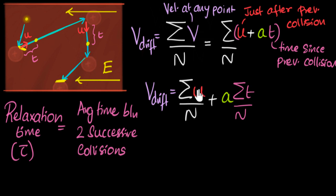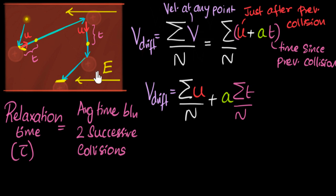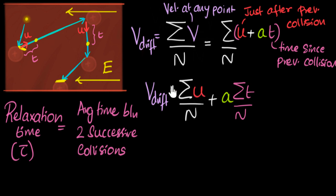You may ask how we know it's exactly zero. Well, it doesn't have to cancel perfectly — if this number becomes very small compared to the other term, we can assume it to be zero. Another way to see this: if there were no electric field, there's no acceleration, so this term would be zero. And without an electric field we know electrons don't move and there's no current. So if a = 0, drift velocity must be zero, which means (sigma u)/n must be zero.